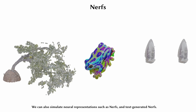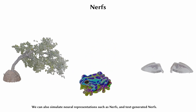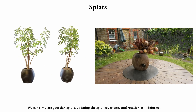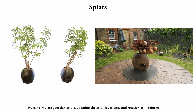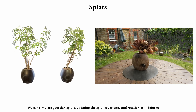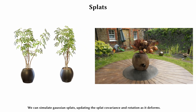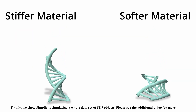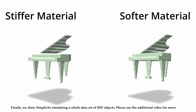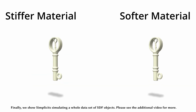We can also simulate neural representations such as NERFs and text-generated NERFs. We can simulate Gaussian splats, updating the splat covariance and rotation as it deforms. Finally, we show Simplicit simulating a whole dataset of objects. Please see the additional video for more.